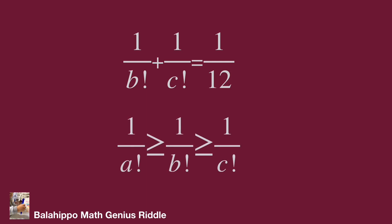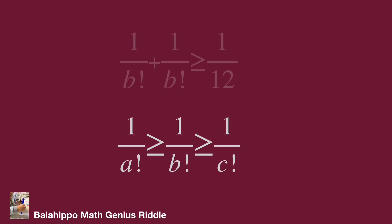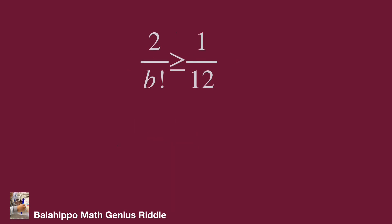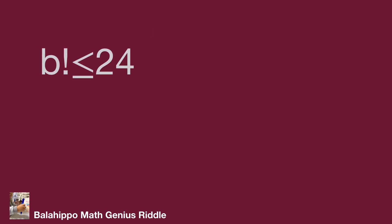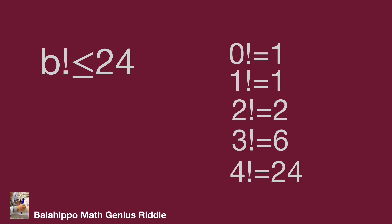We assumed 1 over A factorial ≥ 1 over B factorial ≥ 1 over C factorial. Substituting 1 over C factorial with 1 over B factorial gives 2 over B factorial ≥ 1 over 12, so B factorial ≤ 24. Checking the factorial values from 3 factorial to 4 factorial, and since 1 over A factorial ≥ 1 over B factorial, B factorial could equal 6 or 24.